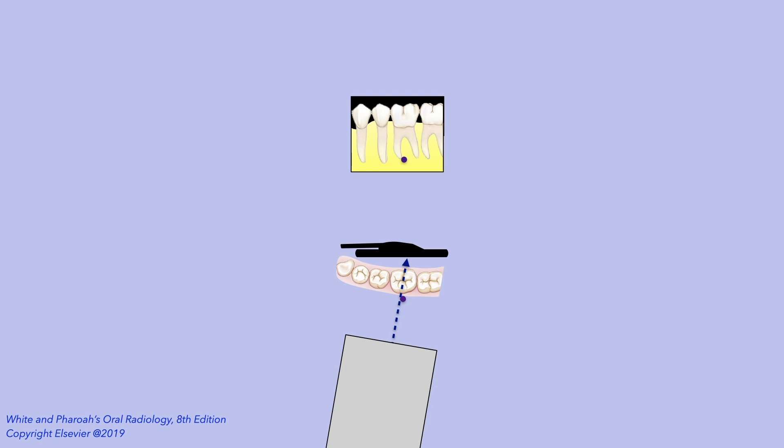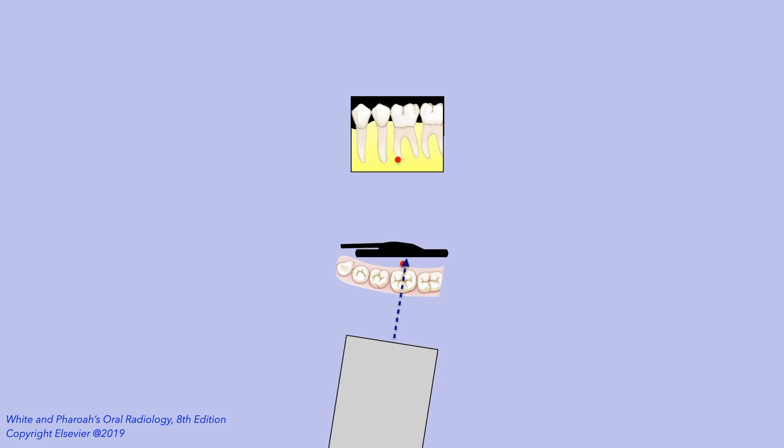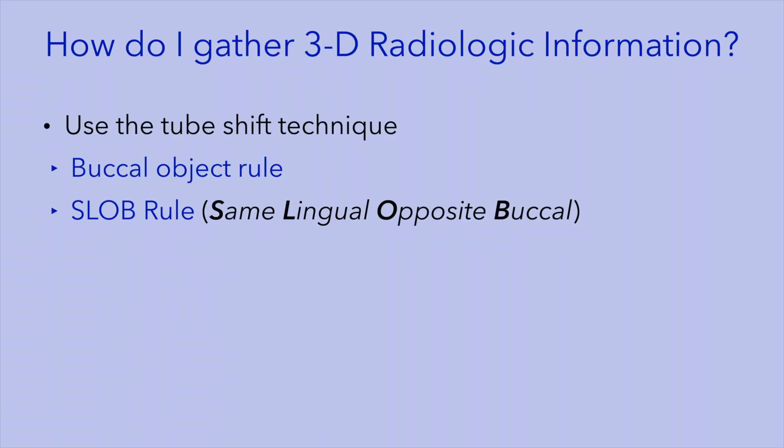Now let's consider another object that's located lingual to the mandibular first molar. In a standard projection, this object will also be superimposed over the mesial root of the mandibular first molar. When we take a secondary radiograph with a mesial angulation, the image of this object appears to move mesially — that is, in the same direction of the tube movement. An easy way to remember this principle is the acronym SLOB: Same Lingual Opposite Buccal. Thus, when the object moves in the same direction as the tube movement, it is located lingual to the reference structure, whereas when the object moves opposite to the tube movement, it is located buccal to the reference structure.